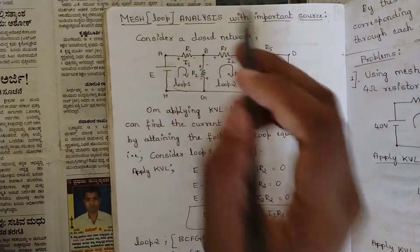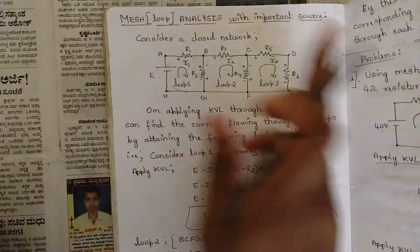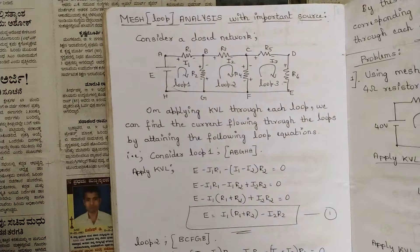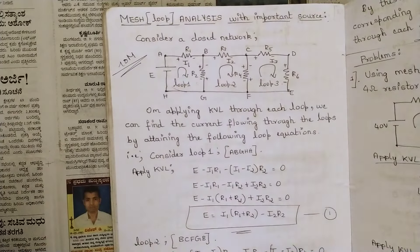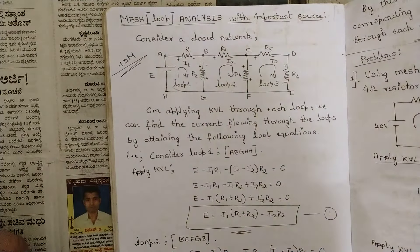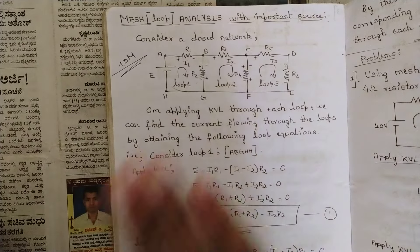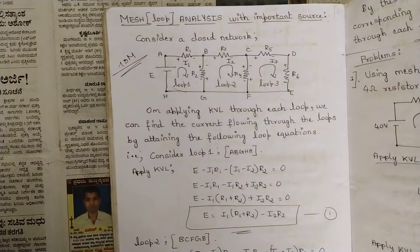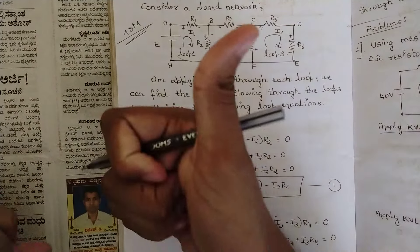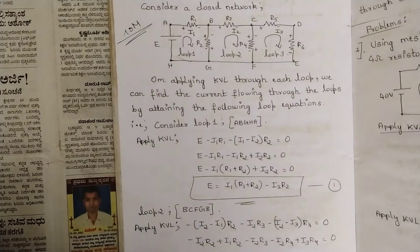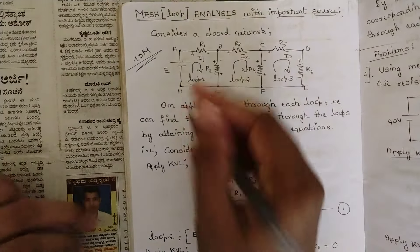One question from this topic is fixed — it is 100% sure that one question will definitely come for 10 marks in mesh analysis or loop analysis. It is a very easy concept; you can easily score 10 marks. Just listen very carefully, don't skip any part of the video, watch till the end, like the video before you start watching, and also watch our previous videos if you haven't.